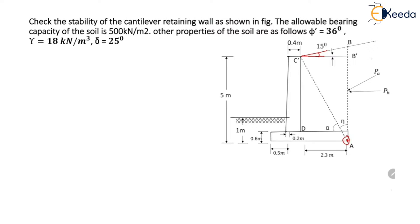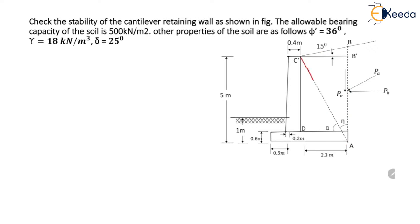The horizontal component of PA is PH and the vertical component is PV. This theory will be applicable only if the shear zone doesn't intersect the stem of the retaining wall. Let us connect the heel point A with point C dash, which is the point on the top of the stem. These points are connected with a dotted line. The angle made by line AC dash with the vertical line AB is eta.